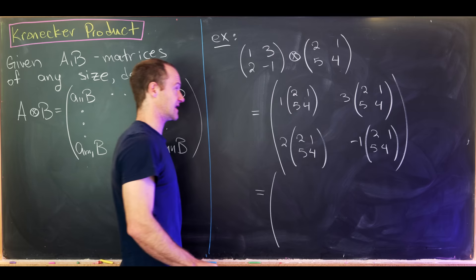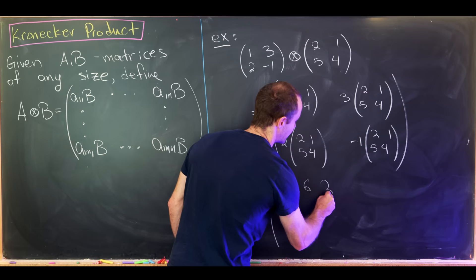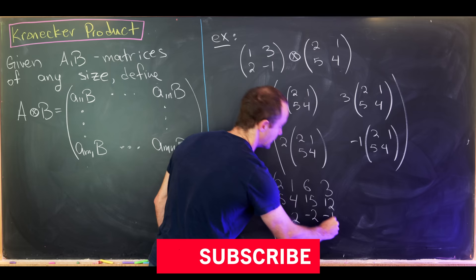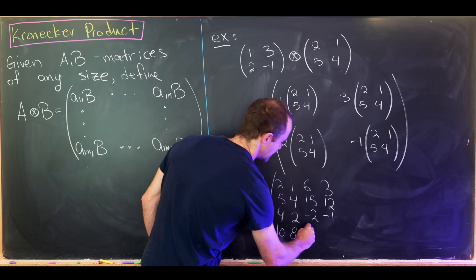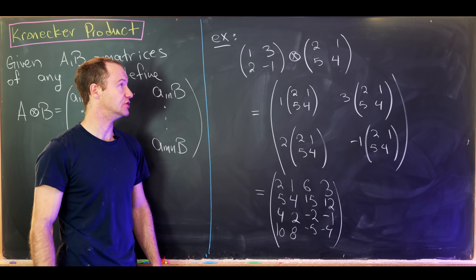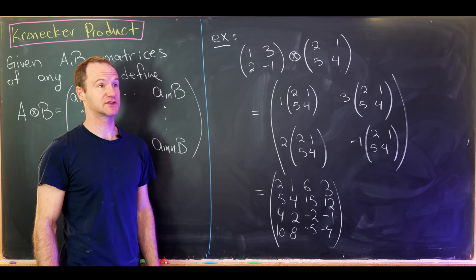Expanding gives us: first row [2, 1, 6, 3], second row [5, 4, 15, 12], third row [4, 2, -2, -1], and fourth row [10, 8, -5, -4]. That is the final answer — the Kronecker product of these two 2×2 matrices.